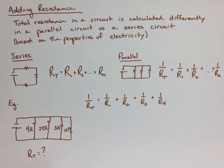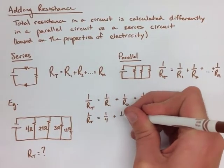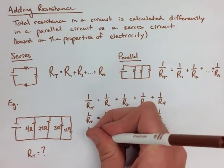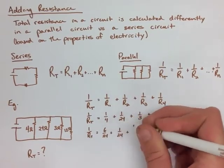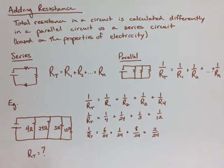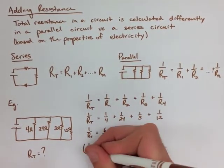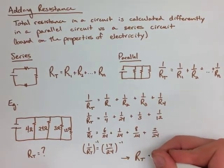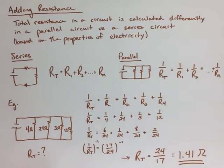So we've got the inverse of RT equals the inverse of R1 plus the inverse of R2 plus the inverse of R3 plus the inverse of R4. We need to now find a common denominator so we can add these fractions, which is 24. When we put 24 on the bottom of the denominator for each fraction, and then add them all together, we get 17 over 24. We now take the inverse of that value to find our total resistance, which equals to 24 over 17, and that's 1.41 ohms.